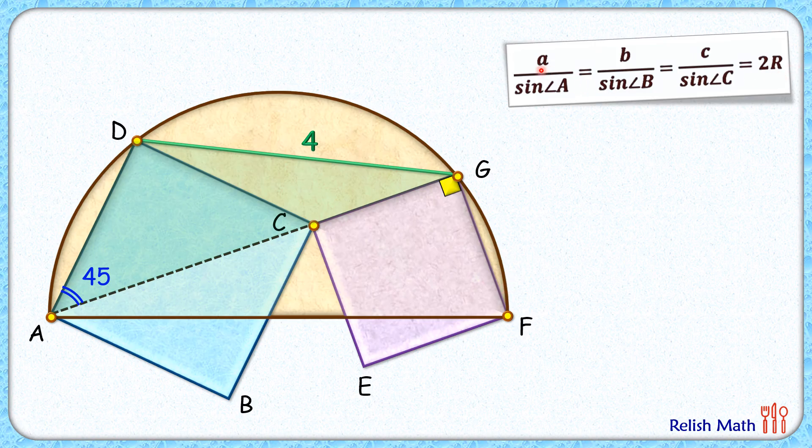Instead of a, we put 4, and instead of angle A, we put 45 degrees. So we get 2R = a/sin A, that is 2R = 4/sin 45.